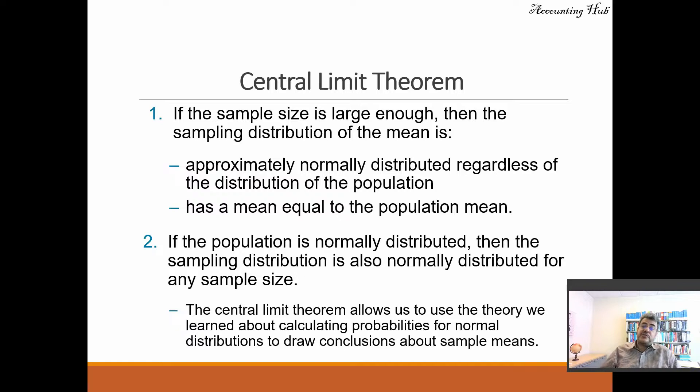And if the population is normally distributed, then the sampling distribution is also normally distributed for any sample size. So if the population is not normally distributed and our sample size is large, okay, let's consider the sample as normal. If the population is already normal, it doesn't matter the size of the sample; the sample is also normal.